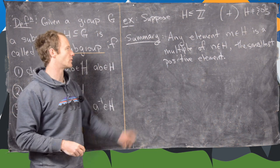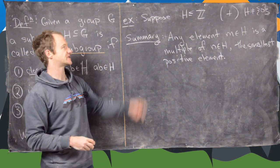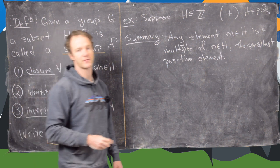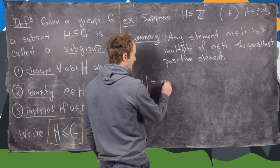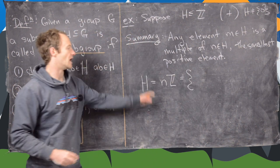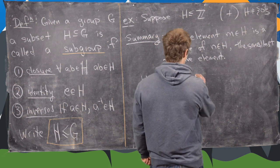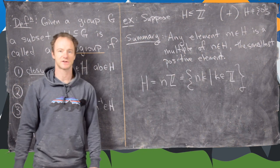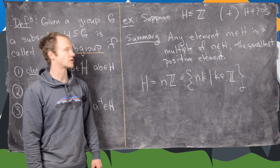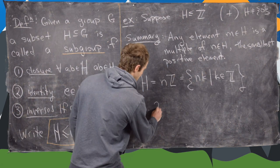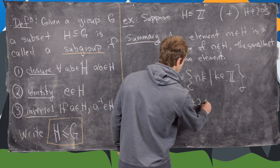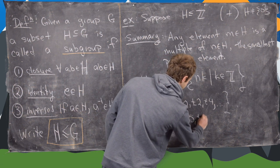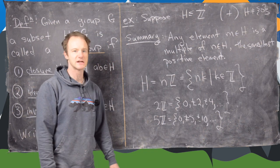Here's our summary: any element M of H, a subgroup of the integers under addition, is a multiple of N, where N is the smallest positive element of H. In other words, H = nℤ = {N·k | k ∈ ℤ}. We have classified all subgroups of the integers. For example, 2ℤ = {0, ±2, ±4, …} and 5ℤ = {0, ±5, ±10, …}. Every subgroup of the integers must be of one of these forms.